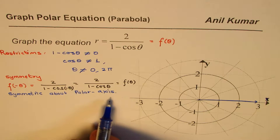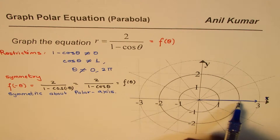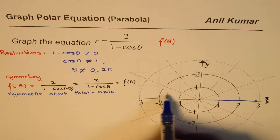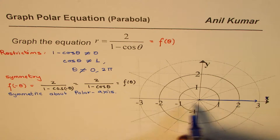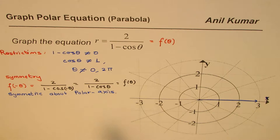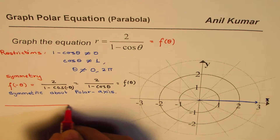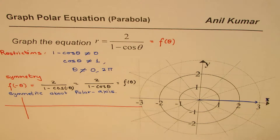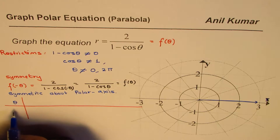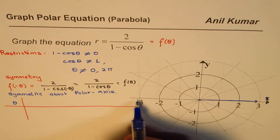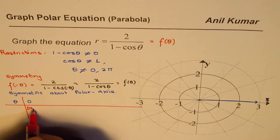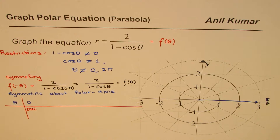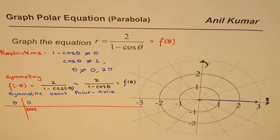This is a very important conclusion: since the function is symmetric about the polar axis, we just need to calculate values within 0 to π. That graph will be reflected on the polar axis to get the other part. So we'll make a table of values for theta between 0 to π, excluding 0, where the function does not exist because that gives an infinite result.